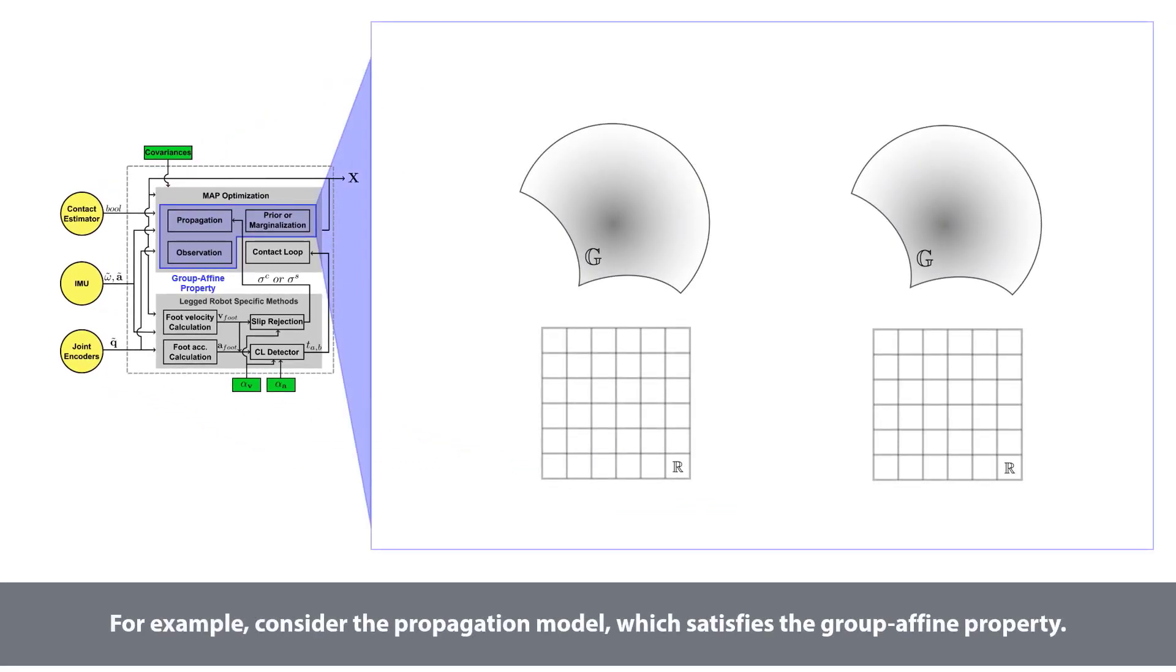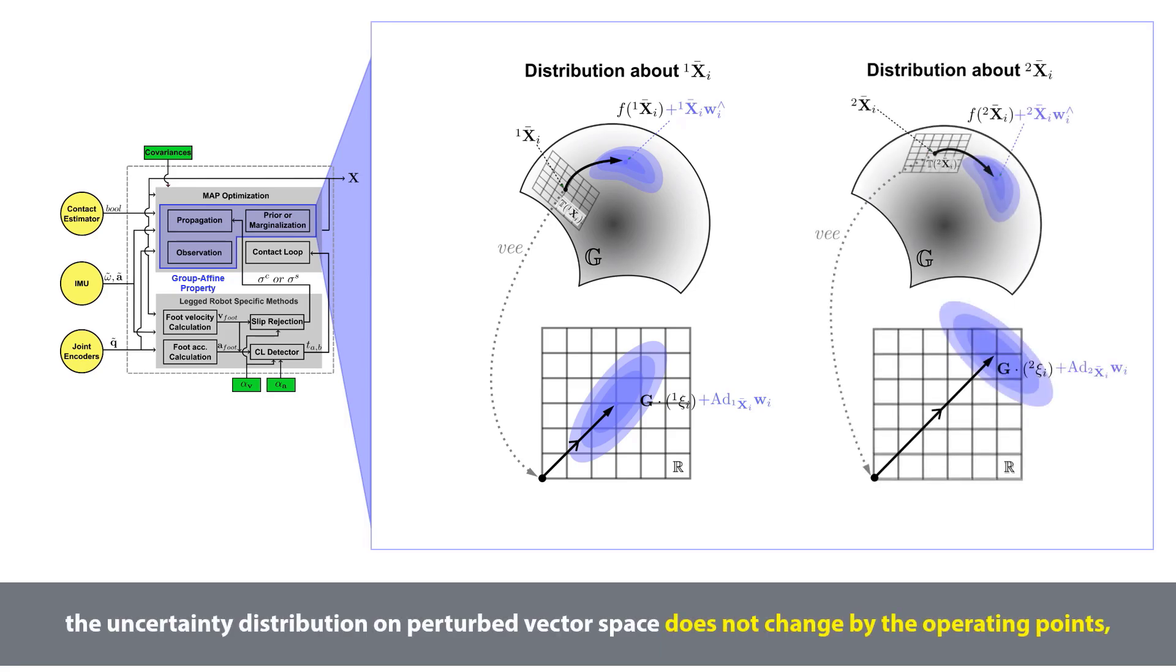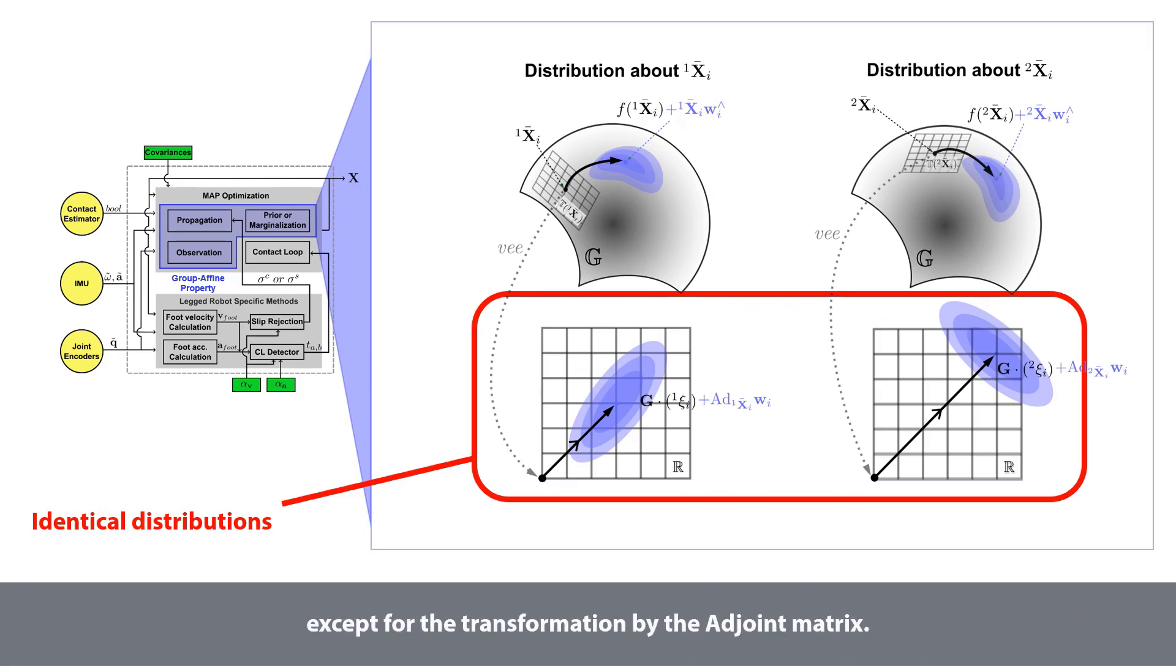For example, consider the propagation model, which satisfies the group affine property. For the same noise vector Wi, the uncertainty distribution on perturbed vector space does not change by the operating points, except for the transformation by the adjoint matrix.